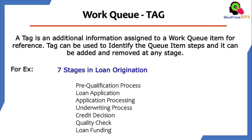If you are working on a project and your Work Queue is based on Loan Origination, you have these Loan Origination Stages and you have an Application Number. For the first time, your Application Number's stage is Prequalification Process. And once it starts, step by step it will go to Loan Application, Application Processing, Underwriting Process, Credit Decision, and so on.